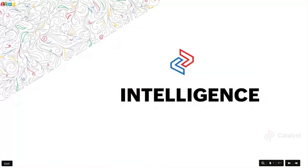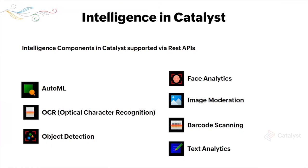The intelligence platform inside of Zoho Catalyst is powered by Zia — Zoho's in-house intelligence suite. We have a total of seven components to discuss today, all powered by Zia: Auto ML, Optical Character Recognition, Object Detection, Face Analytics, Image Moderation, Barcode Scanning, and Text Analytics. While many of these may seem self-explanatory, we'll delve into the functionalities and features offered within each component and see some execution snapshots through the Catalyst console.